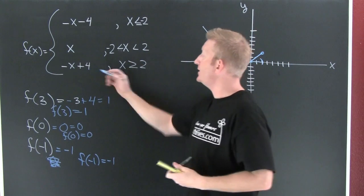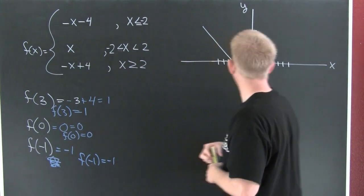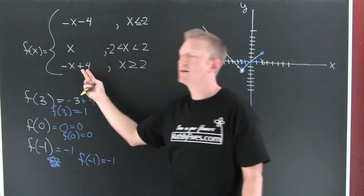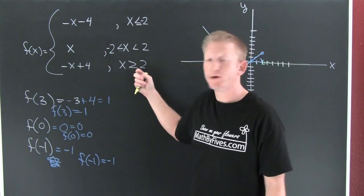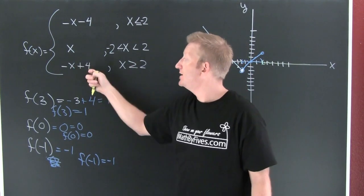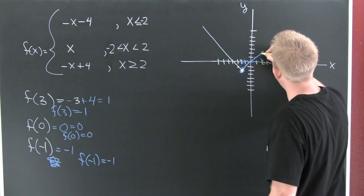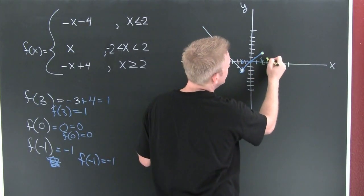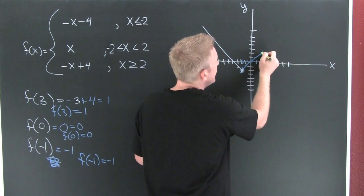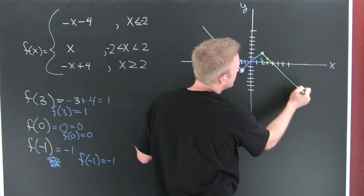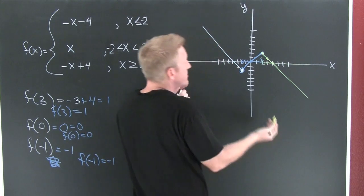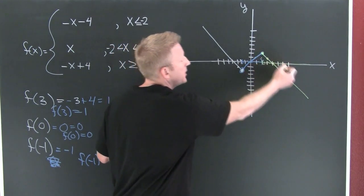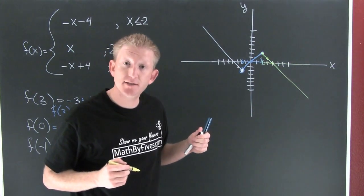Let's take a look at this last piece in yellow. When my x's are bigger than 2, the function does this. At the endpoint x equals 2, that's a negative 2 plus 4 equals positive 2. It owns that endpoint — closed dot. Then I go down 1 over 1, down 1 over 1, and it continues on like that forever. There's a picture of my piecewise defined function. Because I can draw it without picking up my pen, this is piecewise continuous.